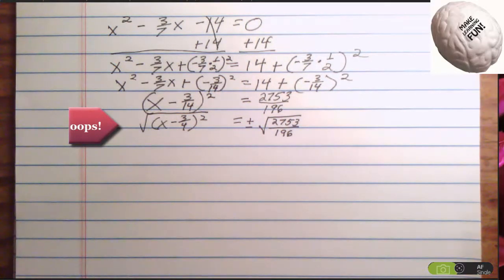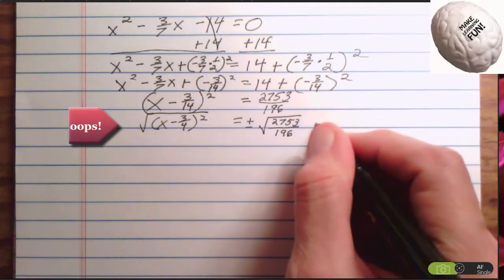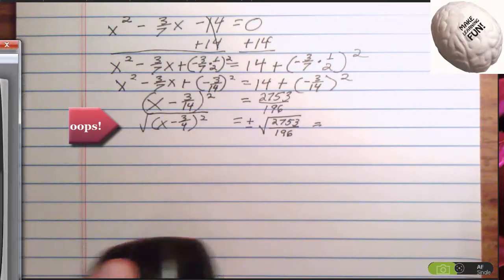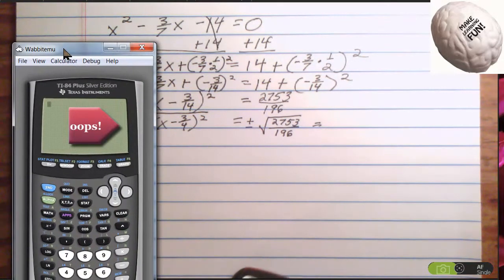Okay, move it over. For now I'm going to move it over. Then I'm going to try breaking it down more. I do, however, know that 196 is a perfect square. Let's bring the calculator back in.